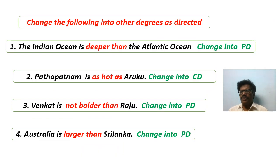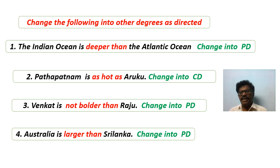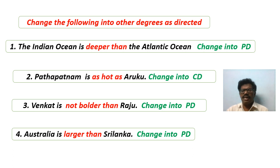Well friends, so far you have seen how to interchange the degrees of comparison when two units are compared. First we interchange the units, then we interchange the expressions 'as...as' and 'than' or 'more than', and then we add 'not' when there is no 'not', and remove 'not' when there is 'not'. Applying these three rules, we can easily interchange the degrees of comparison when there are two units. Now let us attempt an exercise: change the following into other degrees of comparison as directed.